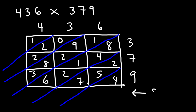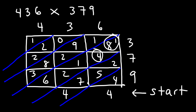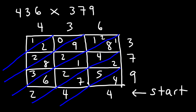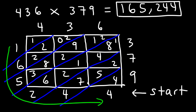Adding along diagonals from the bottom-right: first number is 4. Next: 2 plus 5 plus 7 is 14 — write 4, carry 1. Then 1 plus 8 plus 4 plus 1 plus 6 plus 6 totals 26 — carry 2. Next diagonal: 2 plus 3 plus 9 plus 12 plus 2 plus 8 plus 3 sums to 25 — write 5, carry 2. Then 2 plus 2 plus 2 is 6. Finally just a 1. Reading in order: 1, 6, 5, 2, 4, 4 — the answer is 165,244. You can verify this with a calculator.